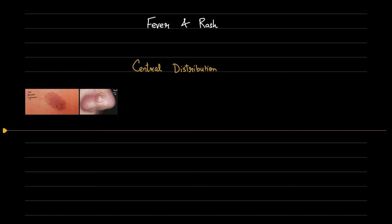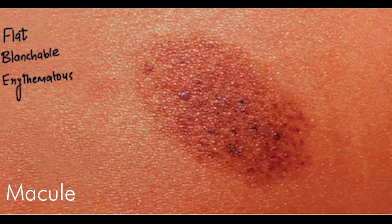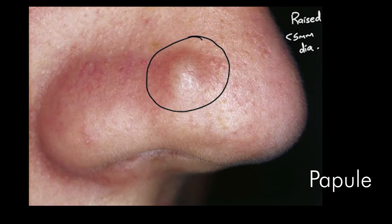Let us first have a look at the kinds of rash. I won't go into much detail, but just enough so that you can identify different lesions. A macule is a flat lesion and you will see an erythematous region which is blanchable — it goes away upon pressing. Papules are raised and have a diameter of less than 5 mm.